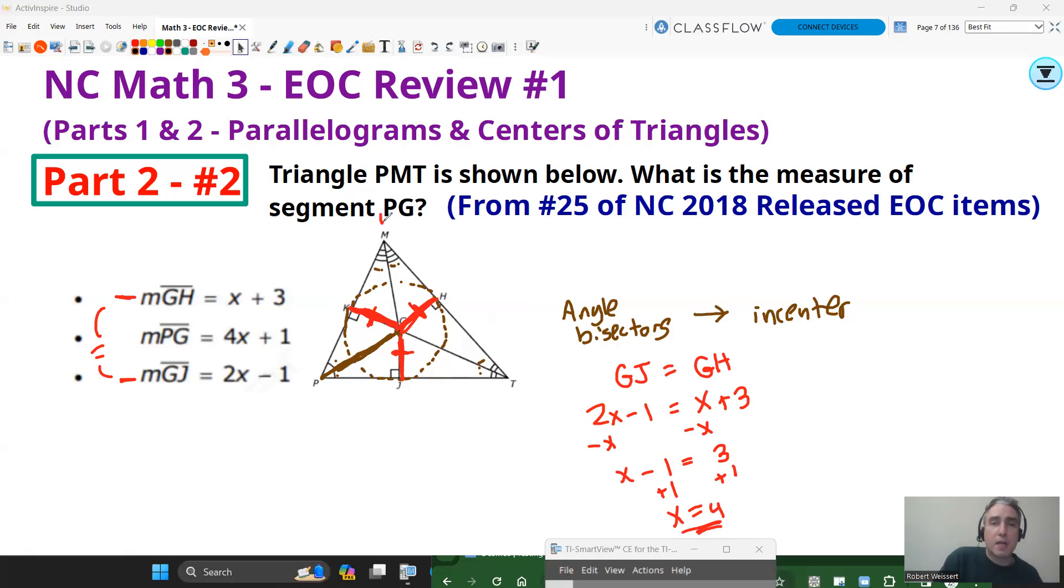Now, once I have the value of X, the question says, what's the length of segment PG? Now, PG is that length right there. So I'm going to actually take that value of X now that I know it, and I'm going to substitute that in for 4X plus 1. So PG is going to be 4 parentheses, 4 times 4, plus 1. That's going to be 16 plus 1. So that's going to give you 17 units. The answer to that question is 17.